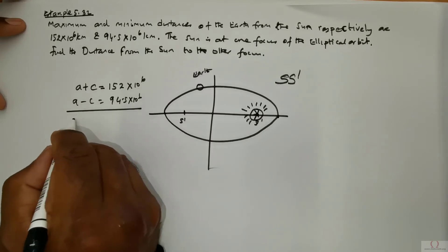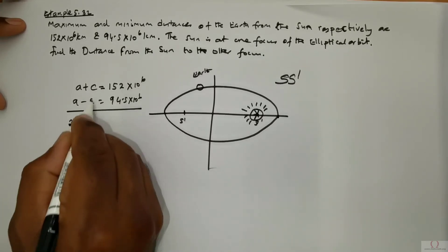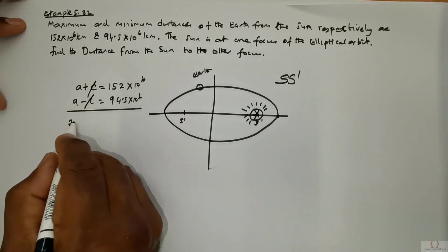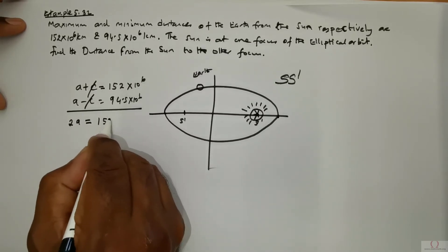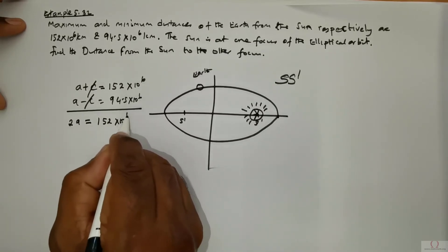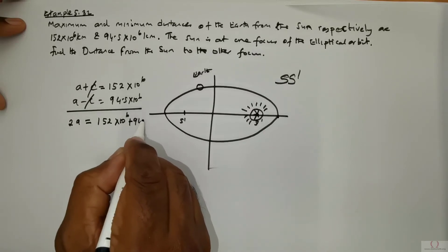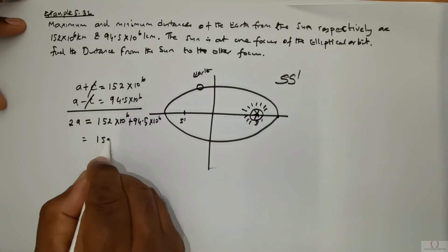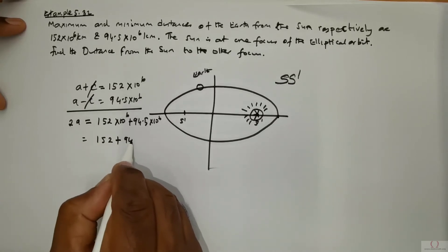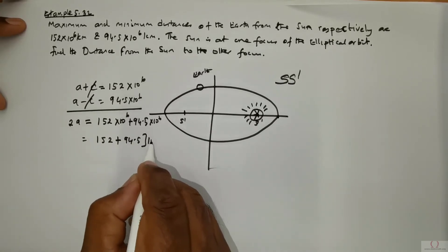Since it has a negative sign what I would do I would start by getting rid of c and writing this as 2a is equal to 152 times 10 to the power 6 plus 94.5 times 10 to the power 6. So this can be rewritten as 152 plus 94.5 times 10 to the power 6.